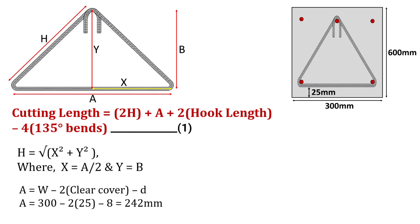The value of A will be equal to width of beam minus twice clear cover minus dia of bar. Width of beam is already given as 300 mm, clear cover is 25 mm and dia of bar is 8 mm. On substituting these values, the value of A will be equal to 242 mm.